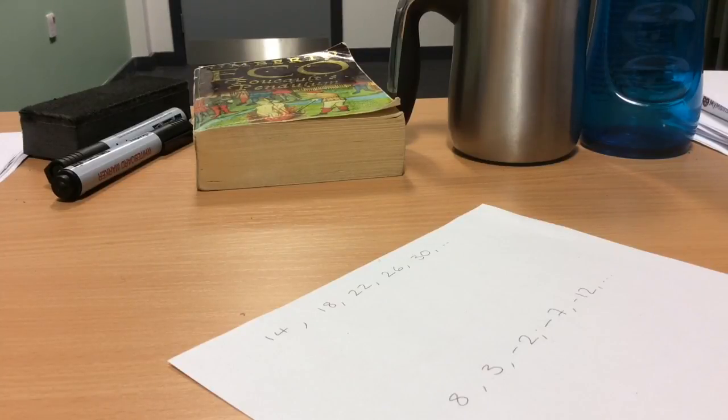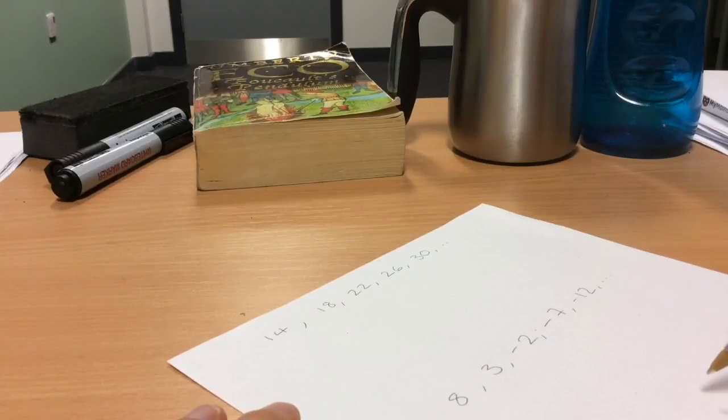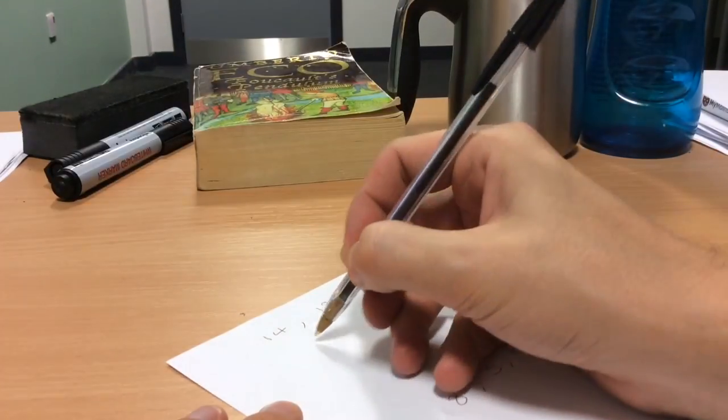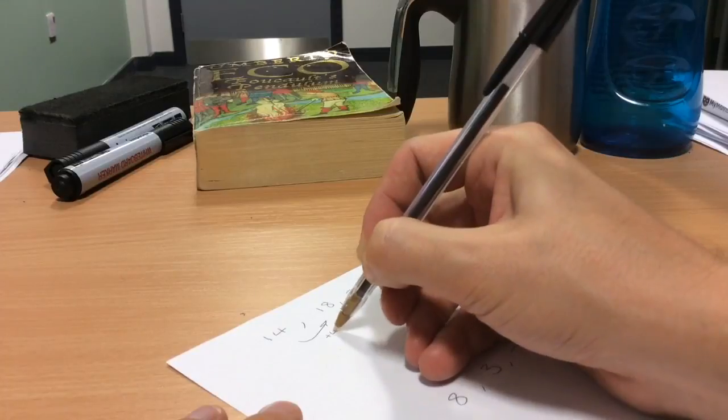So the first sequence that we've got here, the first thing we need to do is find the first difference on this sequence. We see how much we're going up by each time. Okay, in this case 14 up to 18 is plus 4.